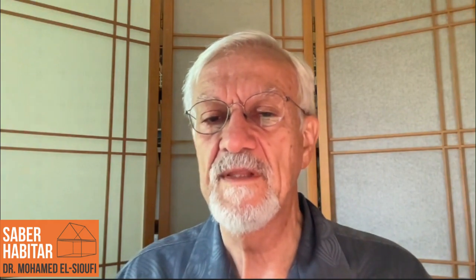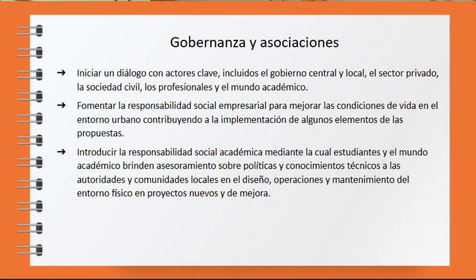Pulling it all together: we started with physical urban planning and the three elements of sustainability. Then how do you manage and govern this through partnerships — integrating dialogue with key actors including central and local government, private sector, civil society, professionals, and academia. Encourage corporate social responsibility to improve living conditions and the urban environment, and introduce academic social responsibility whereby students and academia provide policy advice and technical know-how to local authorities and communities in design, operations, and maintenance in new and upgrading projects.